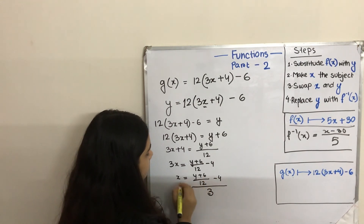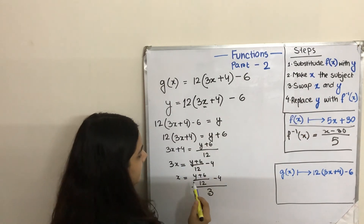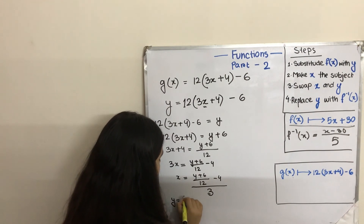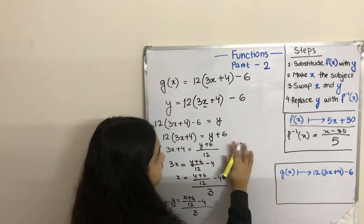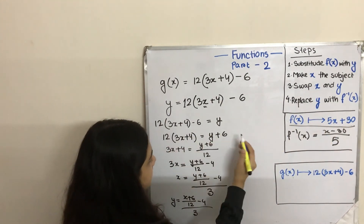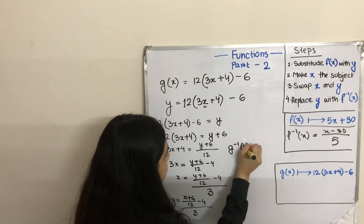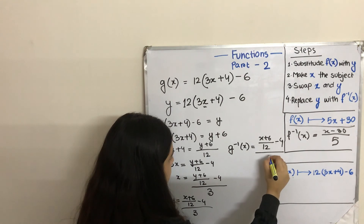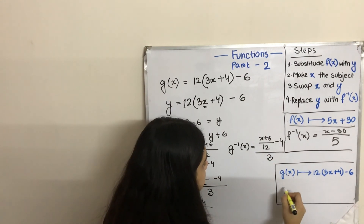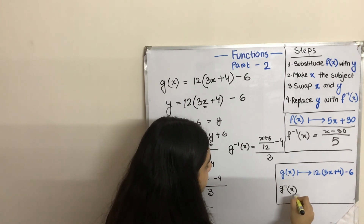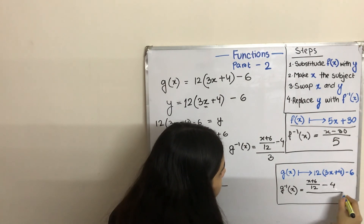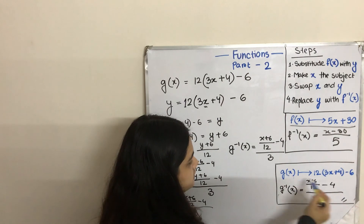Here we made x the subject. Then we will put x in y's space and y in x's space. So y equals to x plus 6 divided by 12, minus 4, divided by 3. Finally, we will replace y with g inverse x. Since it is g, g inverse x equals to x plus 6 divided by 12, minus 4, divided by 3. So the inverse of this function is g inverse x equals to x plus 6 divided by 12, minus 4, divided by 3. This is the inverse of this function.